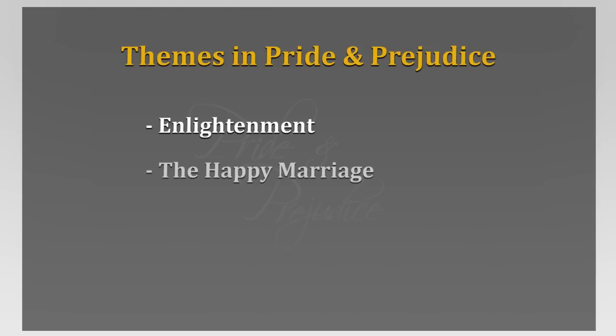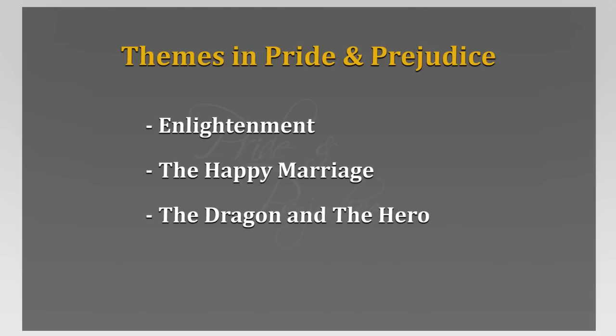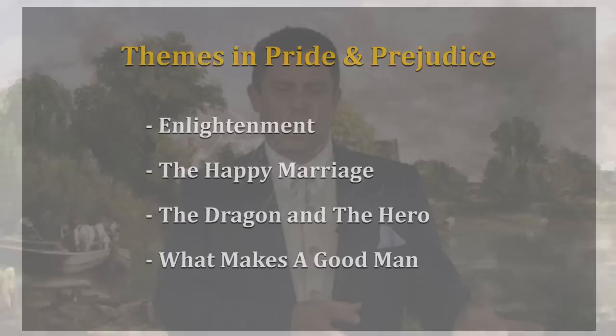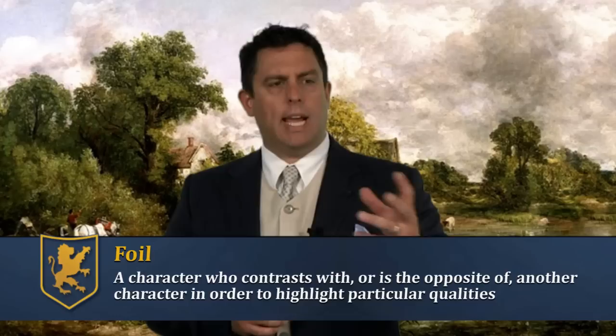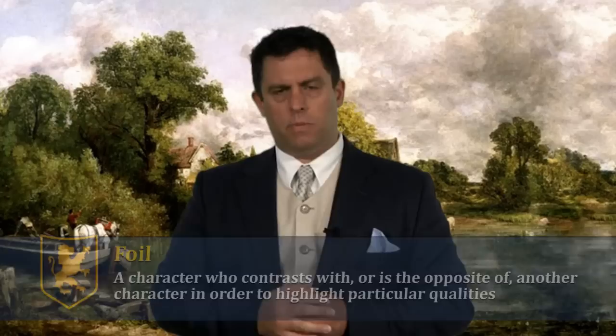Thinking about our work so far, we've got the themes of enlightenment, the happy marriage, and even the dragon and the hero that are going on in this work. What makes a good man? You have to begin asking yourself how the various scenes we've seen so far contribute to these themes — how do they fit into the themes of the hero or the good marriage? Also, how do various characters play as foils to one another? How is Charlotte a foil to Elizabeth? How is Jane a foil to Elizabeth? How does Elizabeth see in her mother something she doesn't want to be? How does Darcy compare to Collins, to Mr. Wickham, to Mr. Bingley?